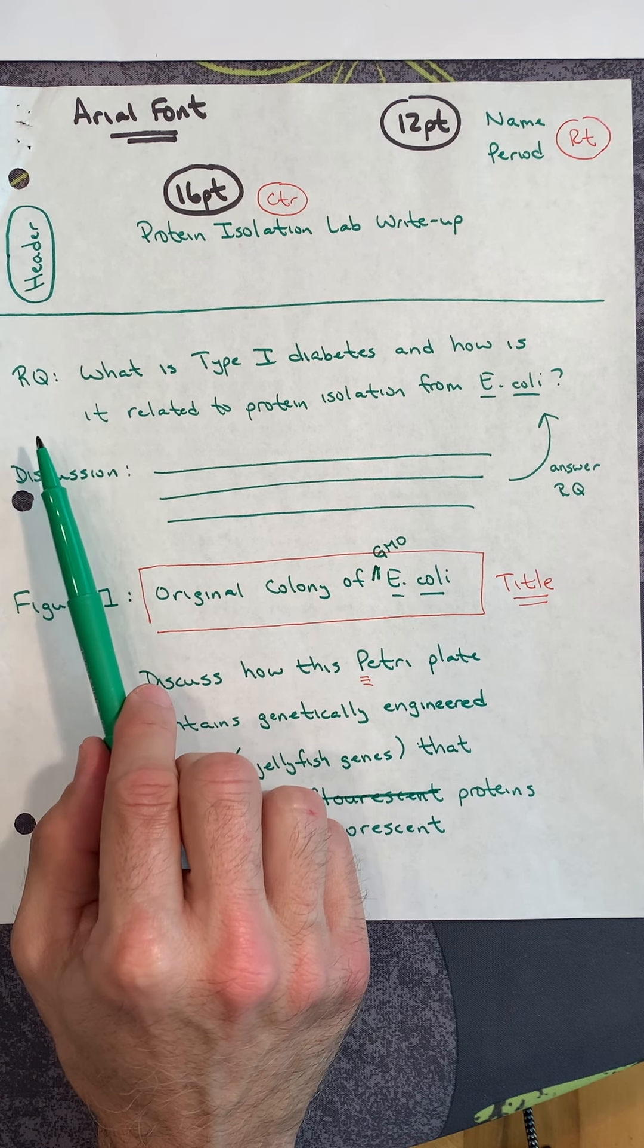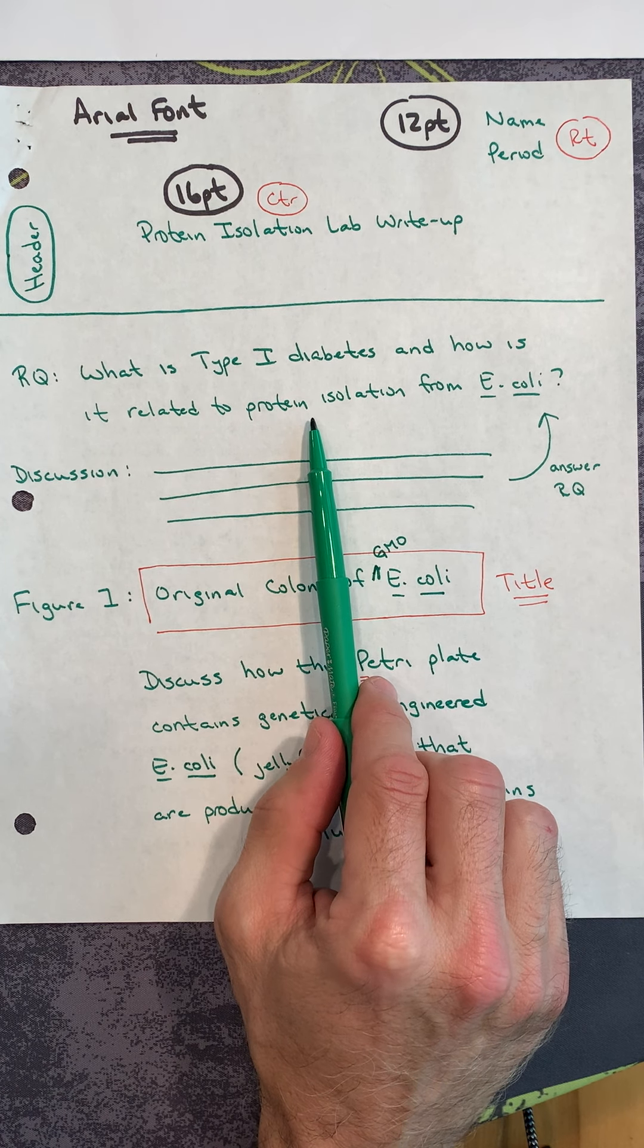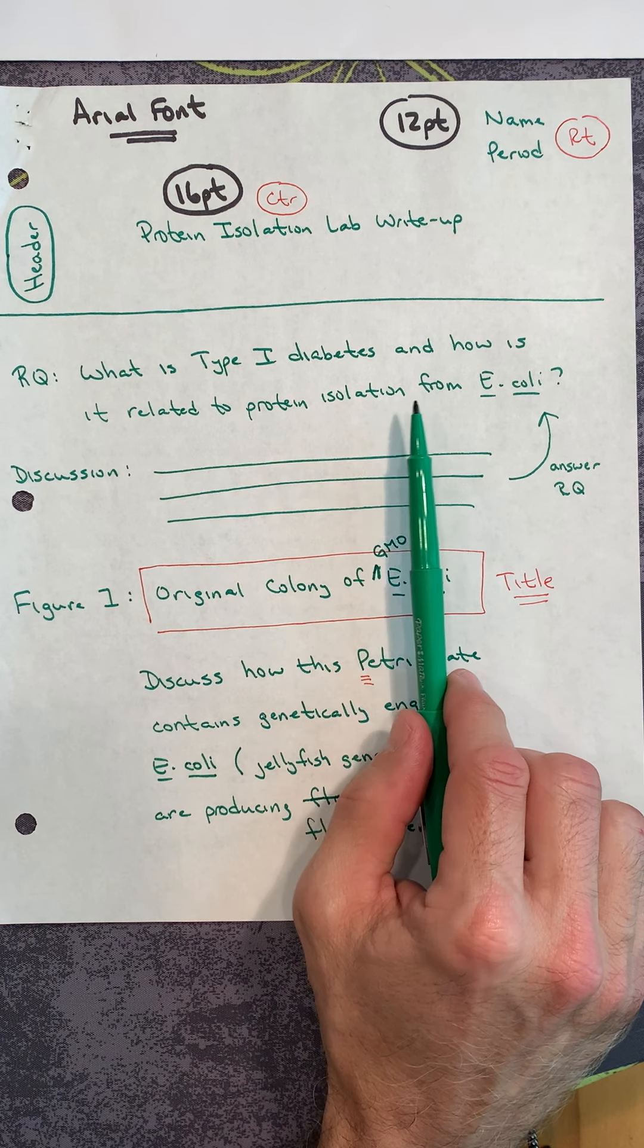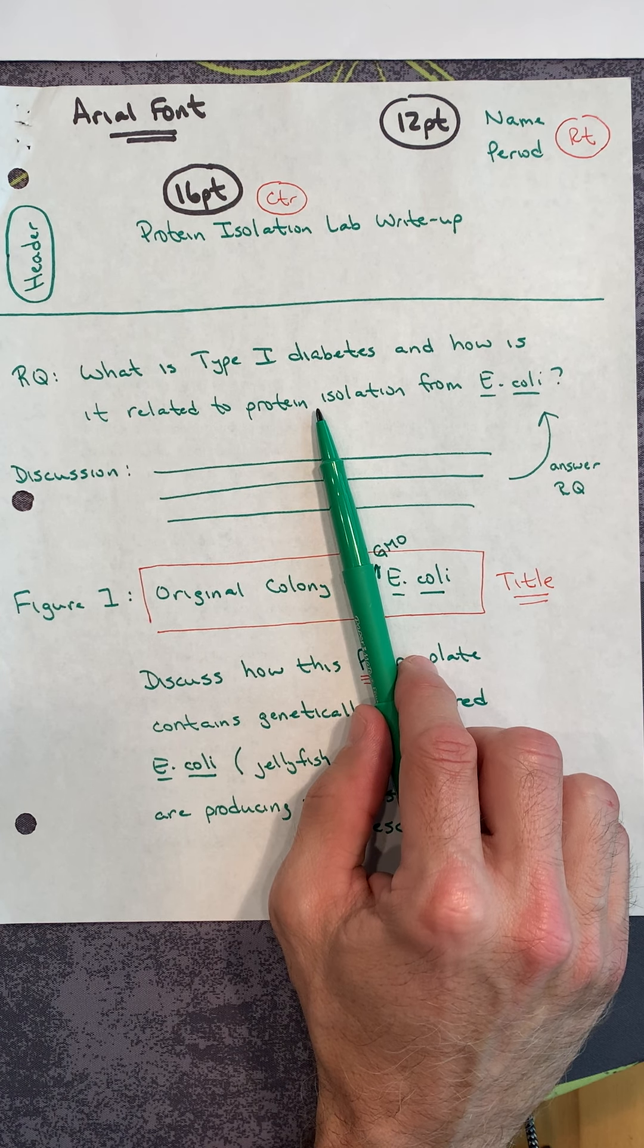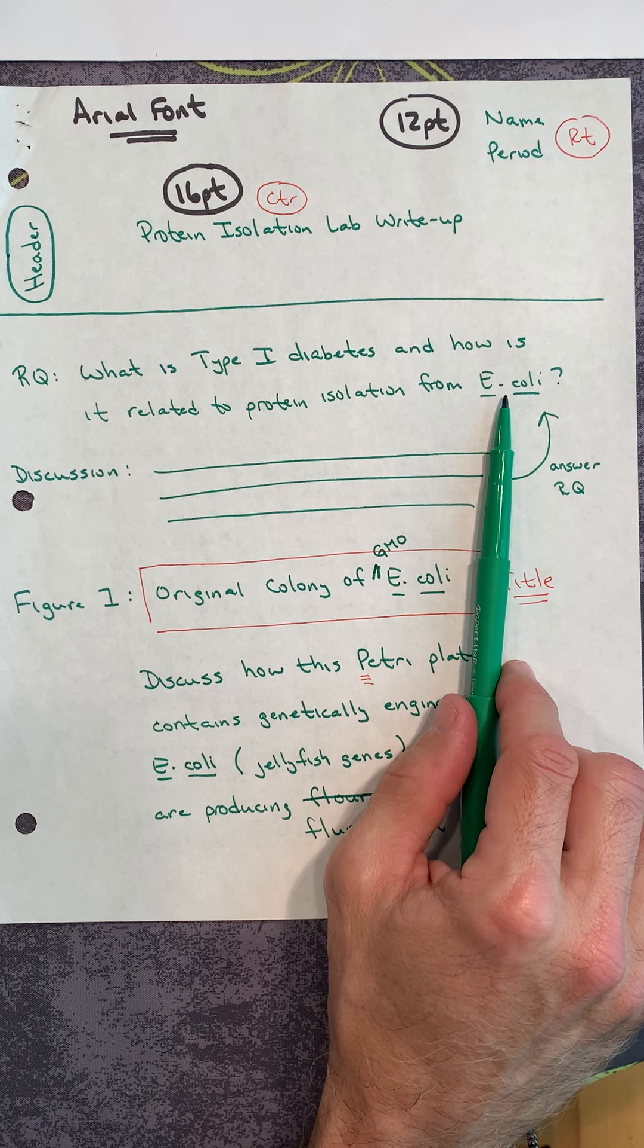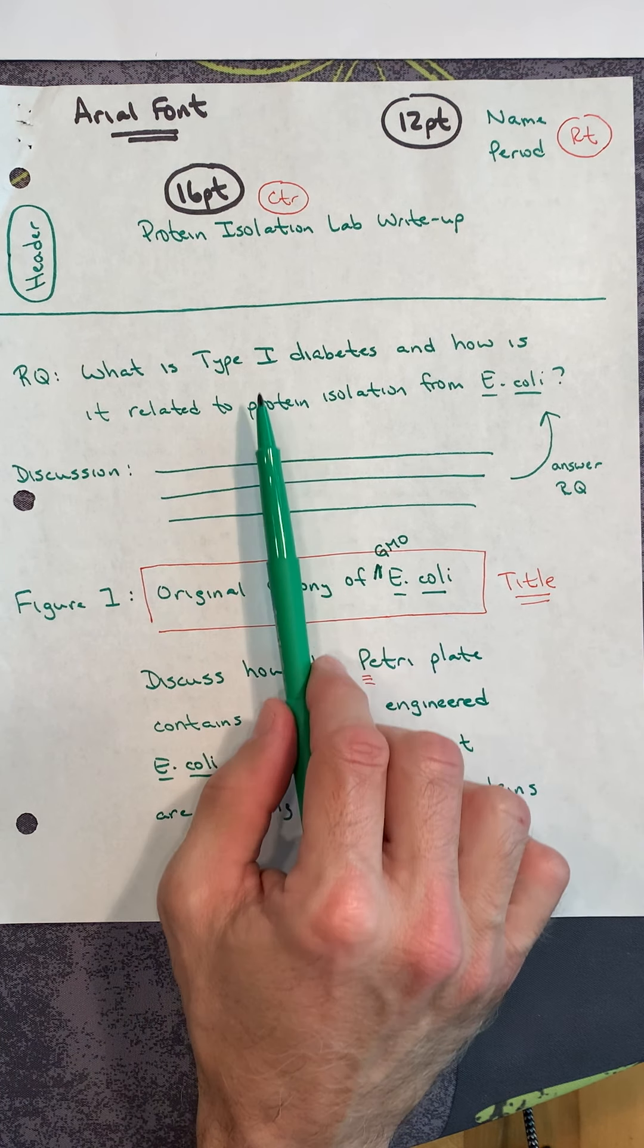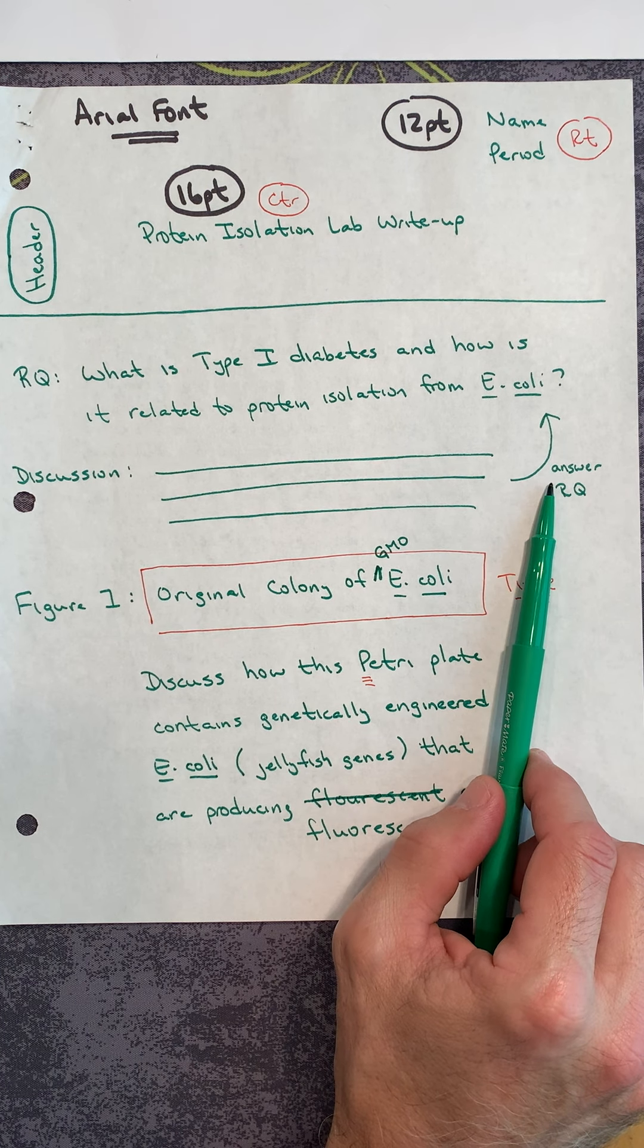Then the research question that we discussed: what is type 1 diabetes and how is it related to protein isolation from E. coli? Don't forget the E. coli are the bacteria that are producing the protein for us. The E. coli are producing the fluorescent protein. Underneath that research question, in the discussion section, you're going to answer the research question.